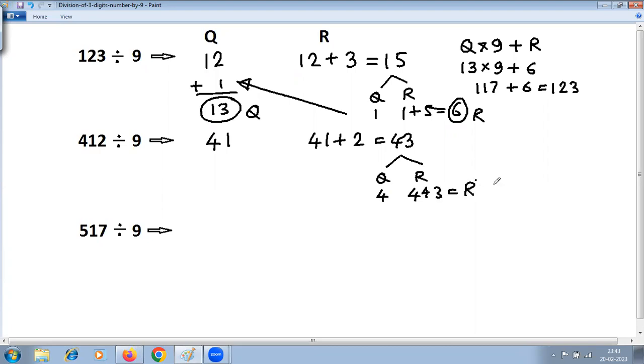Remove the last digit, so the answer is 4. 4 plus last digit, that is 3, gives you remainder 7. 7 is less than 9, so this is the final remainder. Add this 4 to the main portion: 41 plus 4, so answer is 45. Quotient is 45 and remainder is 7.